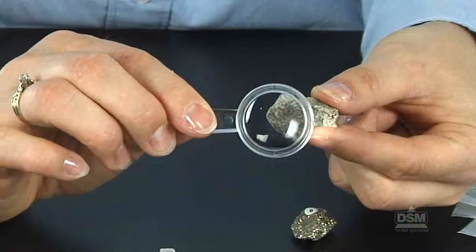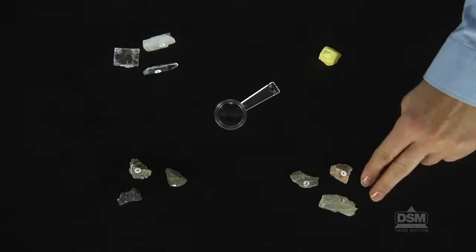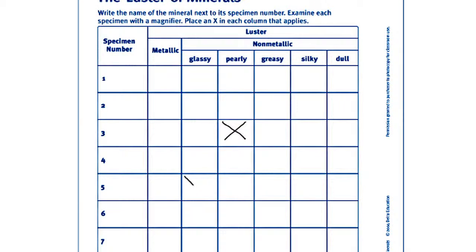Challenge the students to examine the rest of the mineral specimens with a magnifier, classify them according to luster, and then to record their observations on activity sheet three.